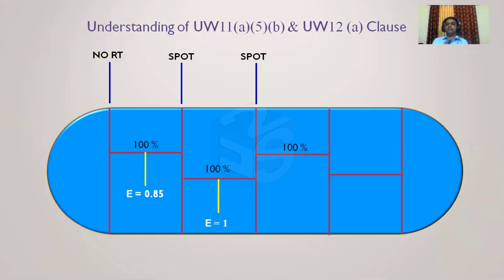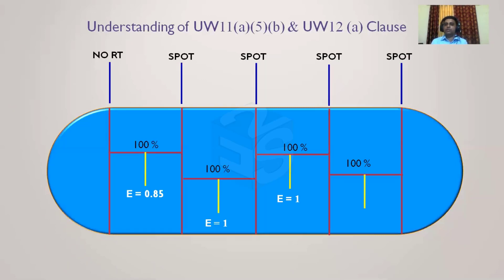Another example: 100% of the L-seam is fully radiographed and the circumferential seam is spot radiographed — again satisfying UW-11a5b, so joint efficiency for the cylinder is 1. And in the last example: 100% radiography for the L-seam and the head-to-shell junction is also at least spot radiographed — it satisfies UW-11a5b, and joint efficiency for the cylinder can be considered as 1.